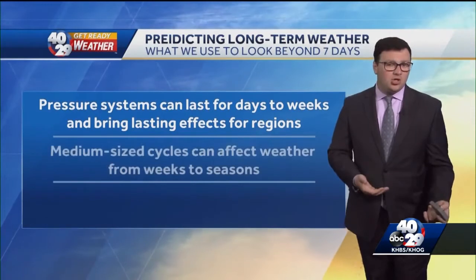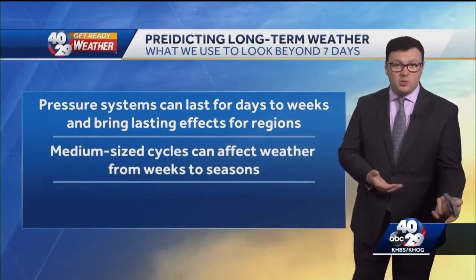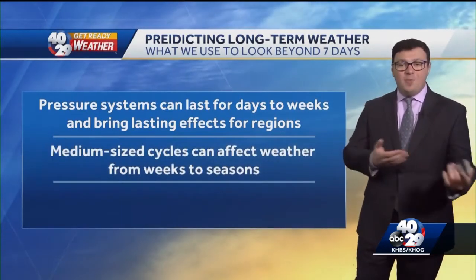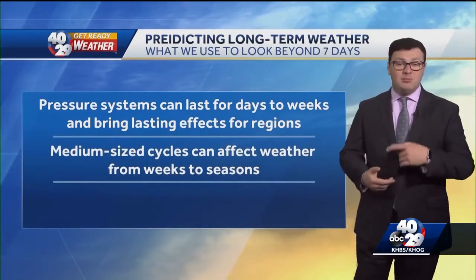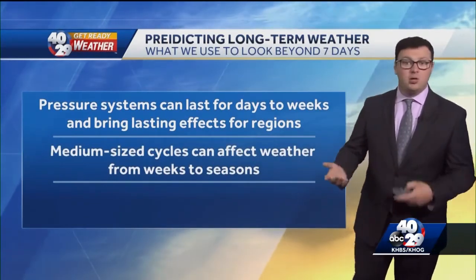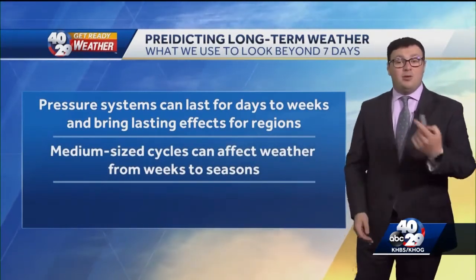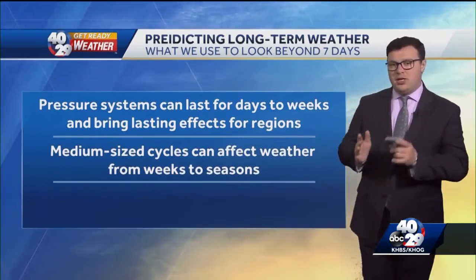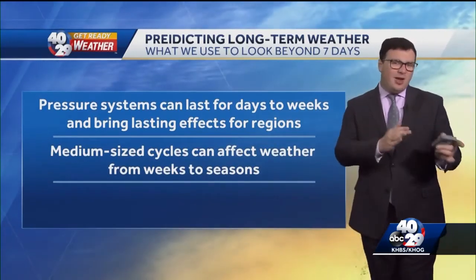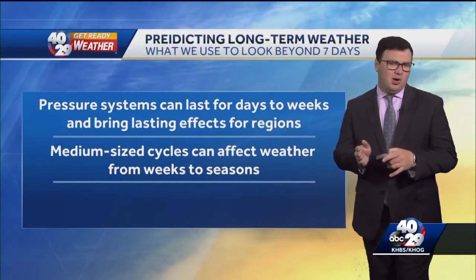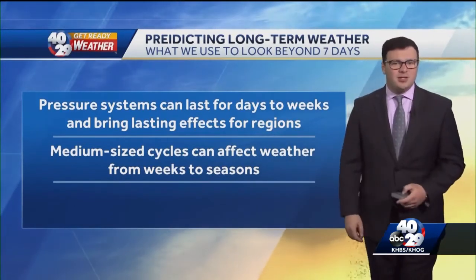Moving to larger, more inter-seasonal cycles — or oscillations as we call them — they go back and forth over the period of a month or two and can cause areas to be drier, hotter, cooler, or wetter. An example of this would be the Madden-Julian Oscillation, which brings either heavier or lighter monsoons to some parts of the world, depending on the phase of that oscillation.